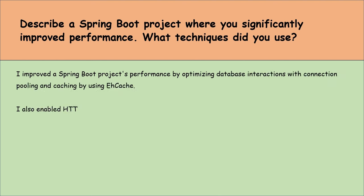How can Spring Cloud Gateway be configured for routing, security and monitoring? For routing, we define routes in application properties or through Java config, specifying paths and destinations for incoming requests. For security, we integrate Spring Security to add authentication, authorization and protection against common threats. To enable monitoring, we use Spring Actuator, which provides built-in endpoints for monitoring and managing the gateway. This setup allows us to control how requests are handled, secure the gateway, and keep an eye on its performance and health, all within the Spring ecosystem.